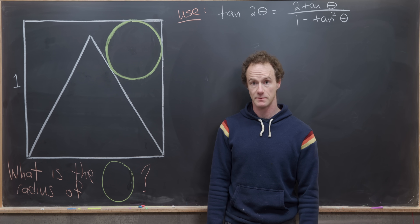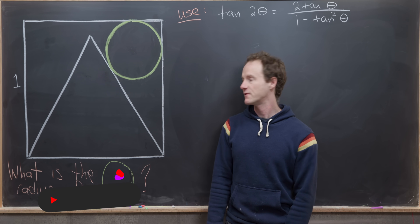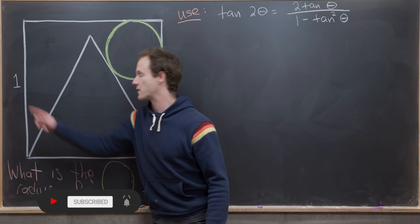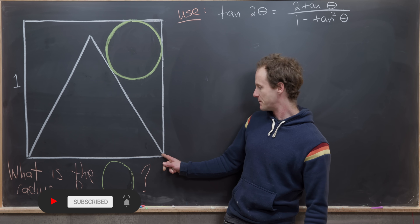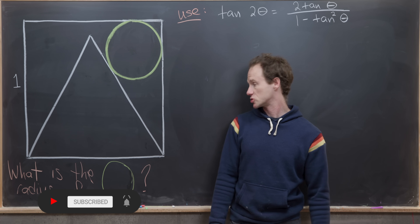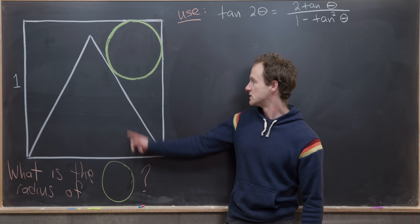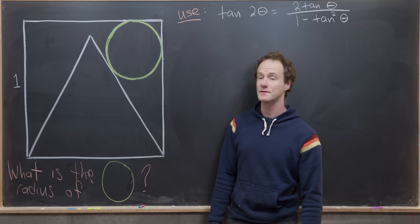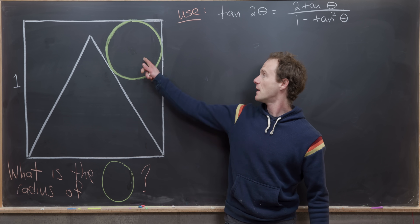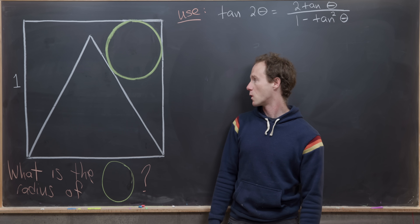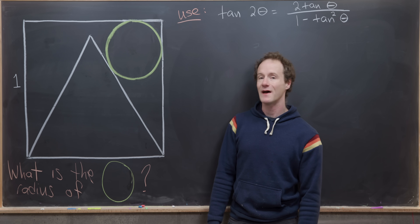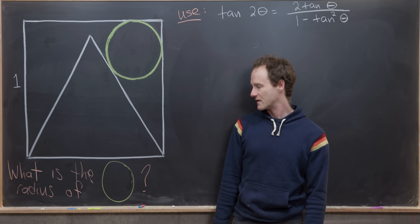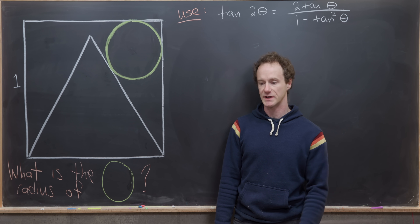Here we're going to look at a nice geometry problem. We've got a unit square — a square with side length one — and sharing the base of this square is an equilateral triangle. The other two sides of the equilateral triangle also have length one. Up in the right-hand corner we have a circle which is inscribed, and we want to find the radius of that circle.